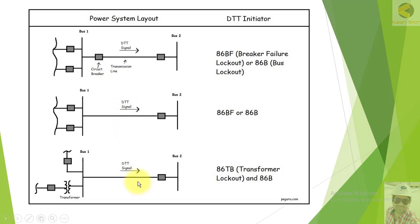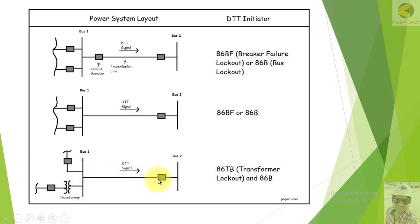This could be in the case of breaker failure or bus bar protection. Here is another example: this is bus one, this is bus two, this is station one and station two. Here the transformer is connected directly without any breaker. If there is a fault on the transformer, it will immediately send DTT to the remote end to trip the remote breaker, stopping the fault current feeding to the transformer.